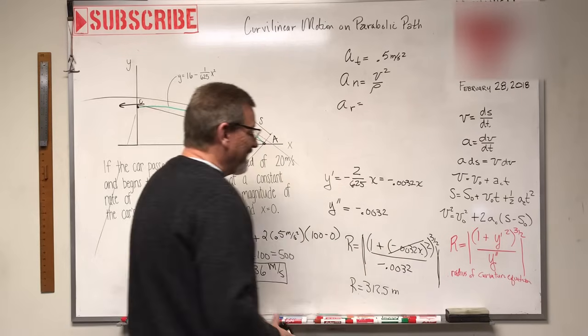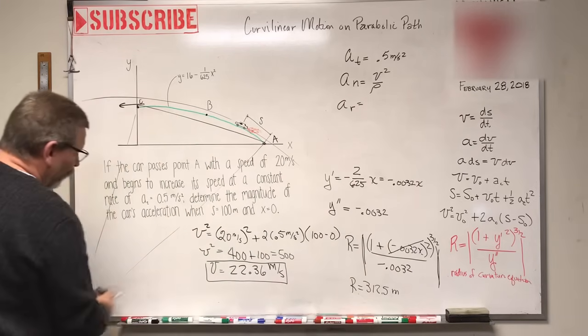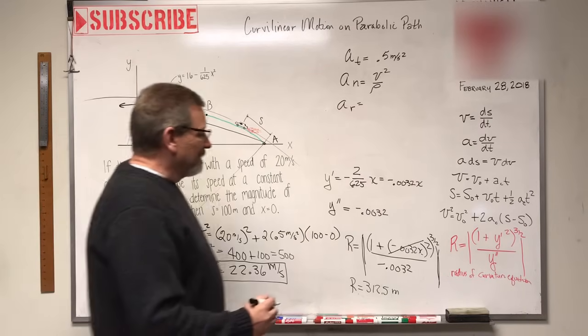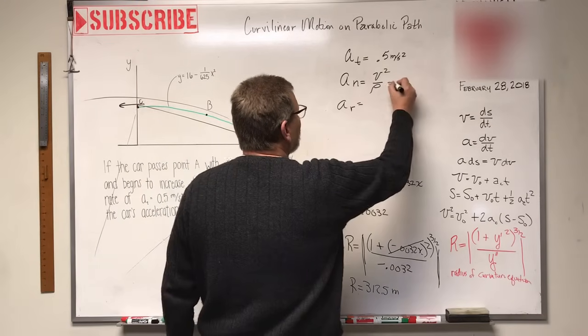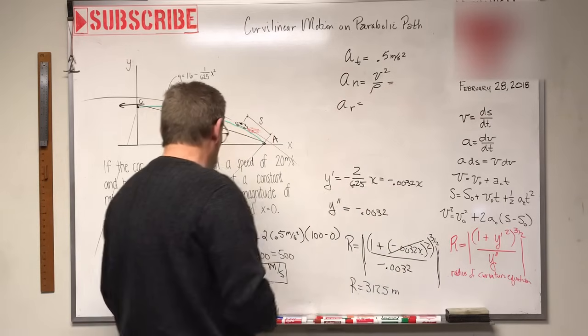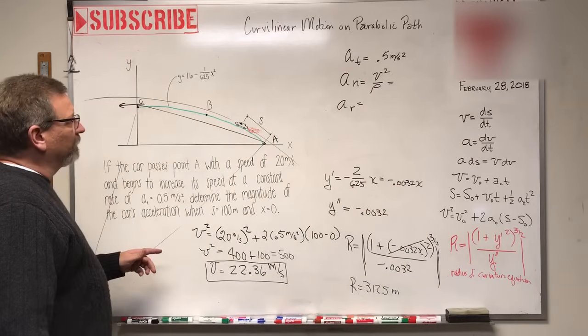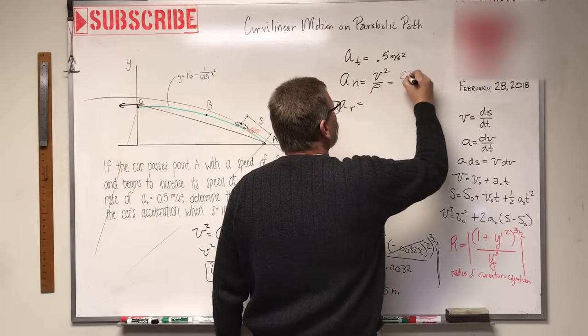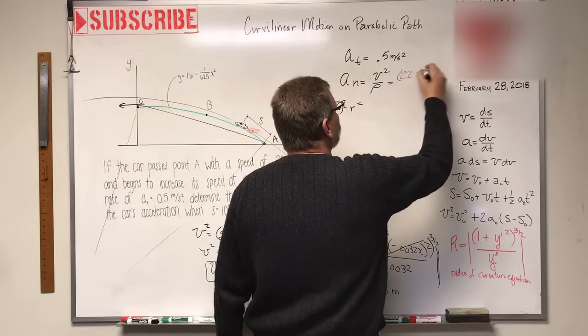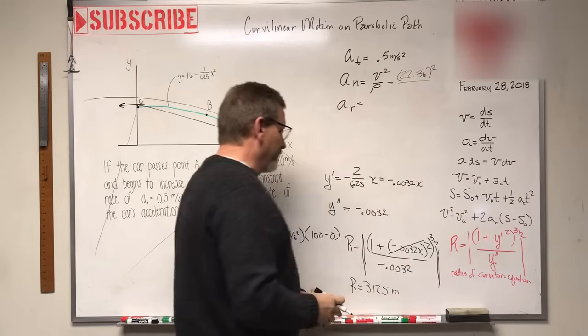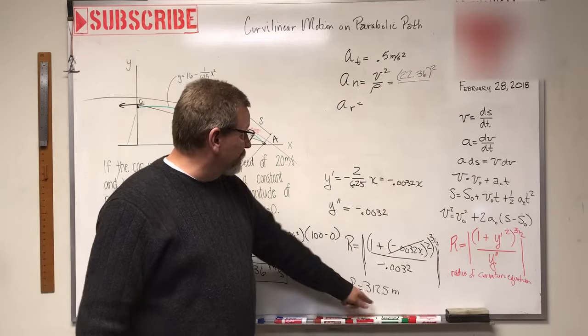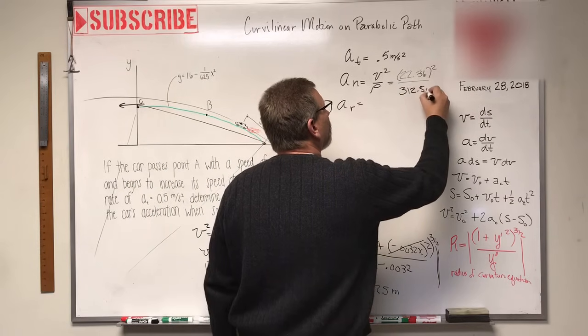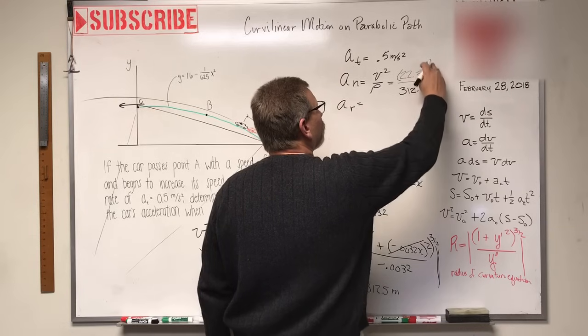So that would be the radius of our gigantic circle - it's 312 meters, that's pretty big. So let's go back up here. Normal acceleration is V squared which is 22.36 squared, divided by the radius of curvature which is 312.5 meters. That one's meters, this one's meters per second.